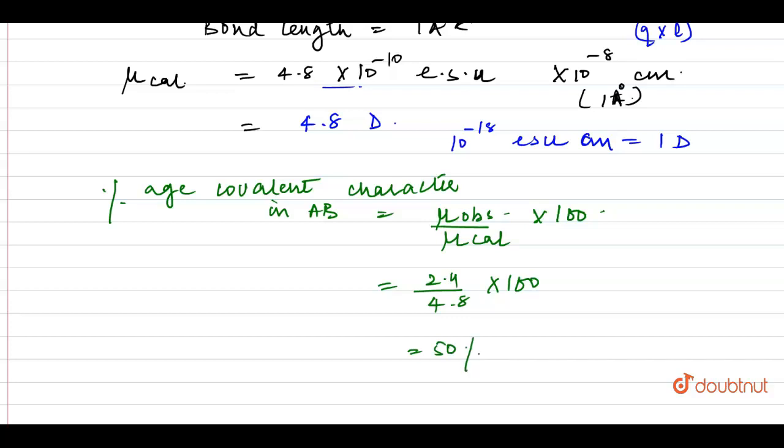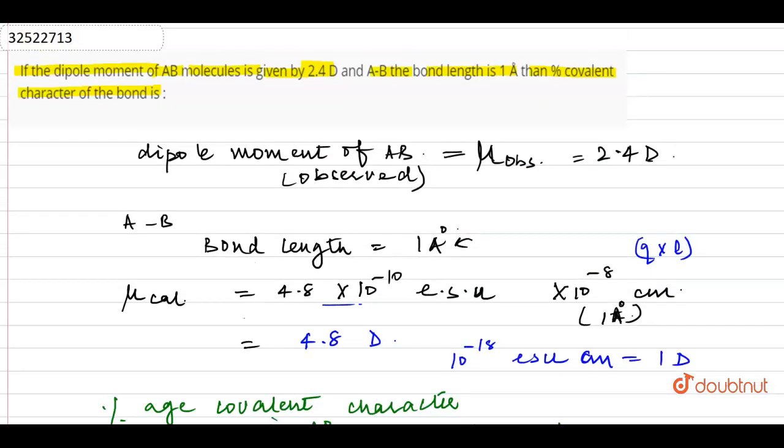So in this case, the percentage covalent character is 50 percent. So 50 percent is my answer. Basically, what does this mean? That 50 percent of this bond is covalent in nature and the remaining 50 percent is ionic. So the percentage covalent character we calculated is 50 percent. And 50 percent is our answer. Thank you.